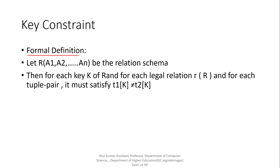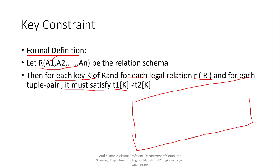The formal definition of the key constraint: suppose we have a relation R with attributes A1, A2, ..., An. For each key K of this relation R, and for each legal relation instance, each pair of tuples must satisfy T1(K) ≠ T2(K). This means no two tuples can have the same key value.